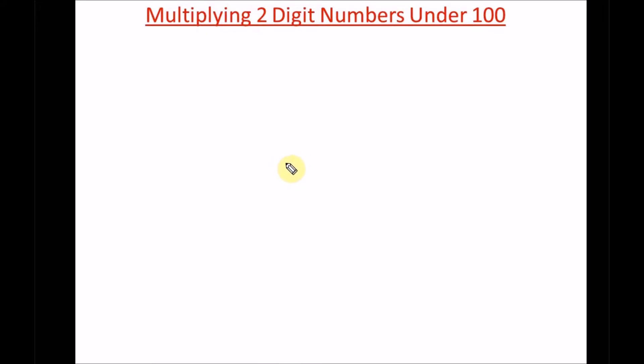Today we're going to look at how we can multiply any two digits under 100 in like three to five seconds, instead of using your calculator or the long multiplication method. This is a math trick we need to learn.